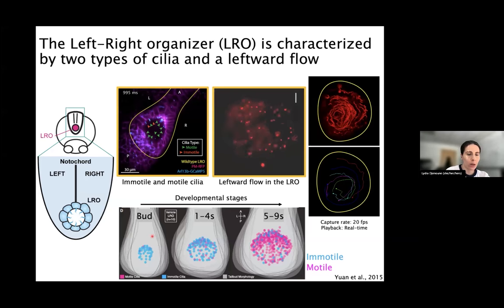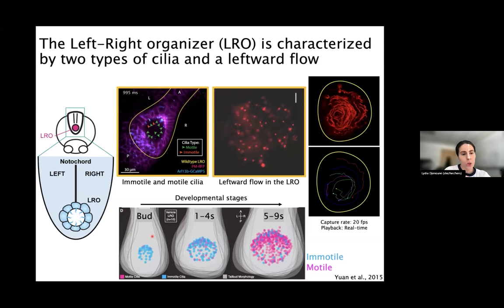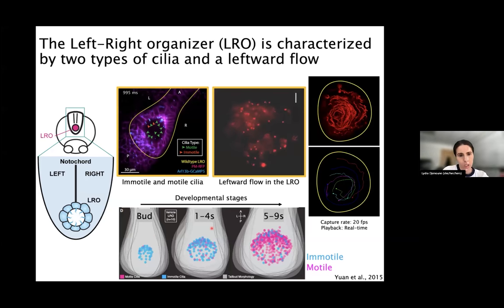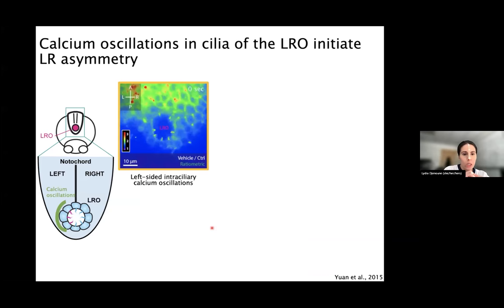At early stages of left-right organizer development, the structure is mainly composed of immotile cilia. As the structure grows, the immotile cilia will be slightly converted into motile ones, mainly ending up with motile cilia at the final stages of LRO development.